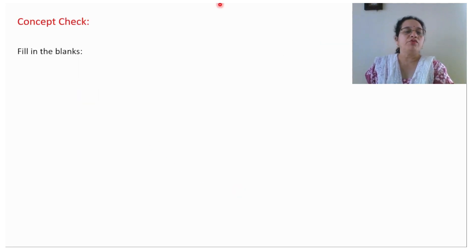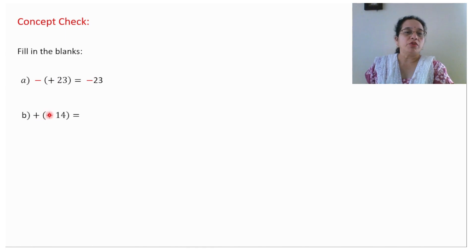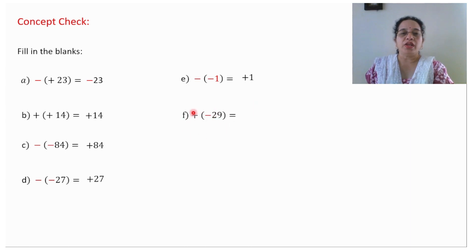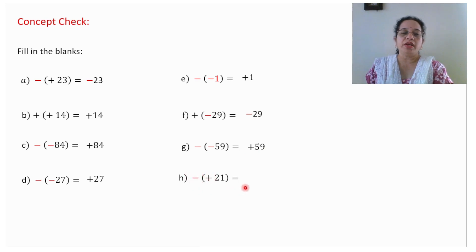Let us take a few examples to check the concept. Any one sign is negative — answer will be negative 23. Positive of a positive, both are positive — answer will be positive 14. Negative of a negative is positive 84. Negative of a negative is positive 27. Negative of a negative is positive 1. Positive of a negative — any one sign is negative — answer will be negative 29. Negative of a negative is positive 59. Negative of a positive — any one sign is negative — answer will be negative 21.